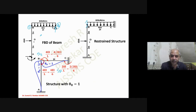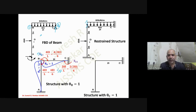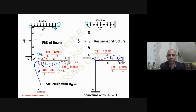Applying θC = 1 (displacement number 2): that support becomes simple and the other becomes fixed. We find moments and label the stiffness elements S12 and S22. Likewise, S21 and S22 are identified, giving the full stiffness matrix.